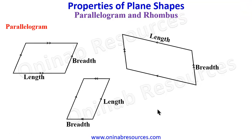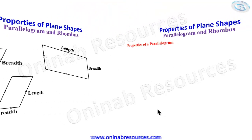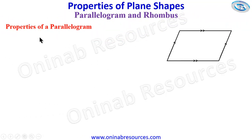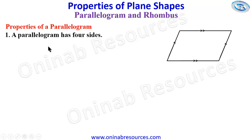So we then go ahead to look at the properties of a parallelogram. For property one, a parallelogram has four sides, as we can see here. This is what makes it a quadrilateral.